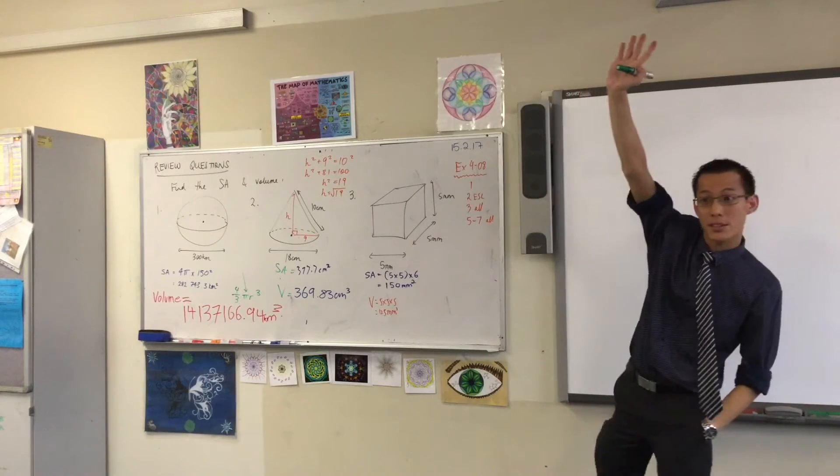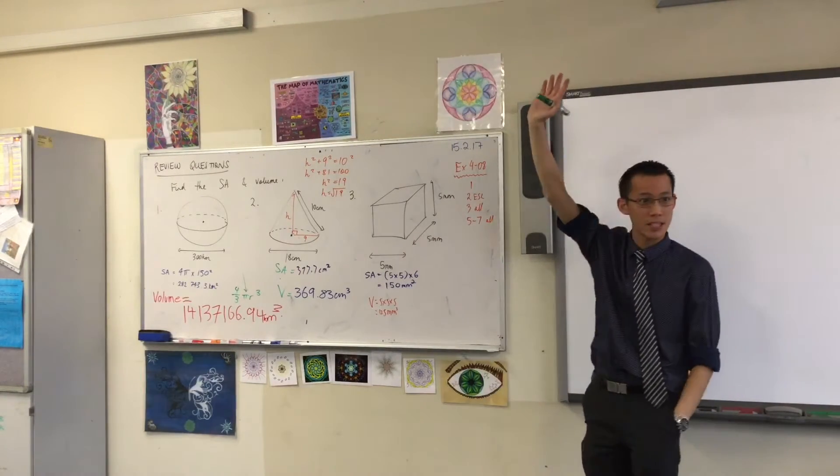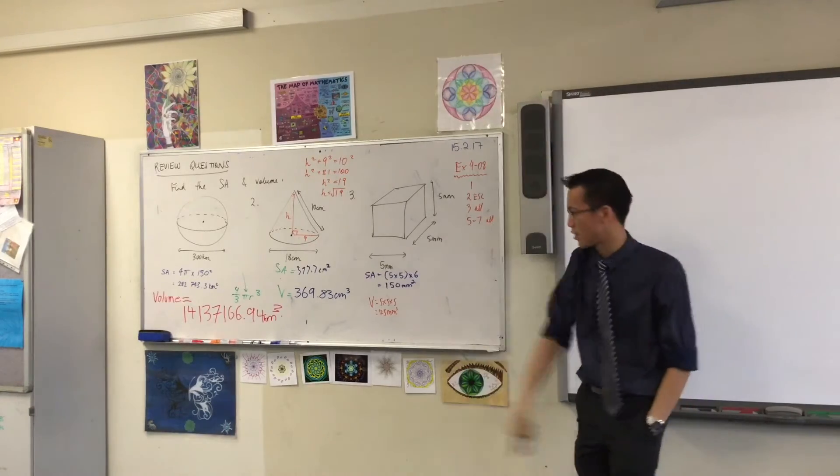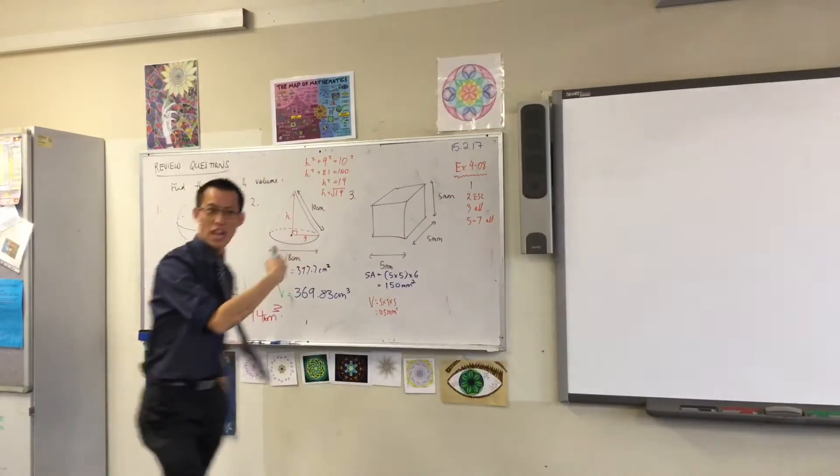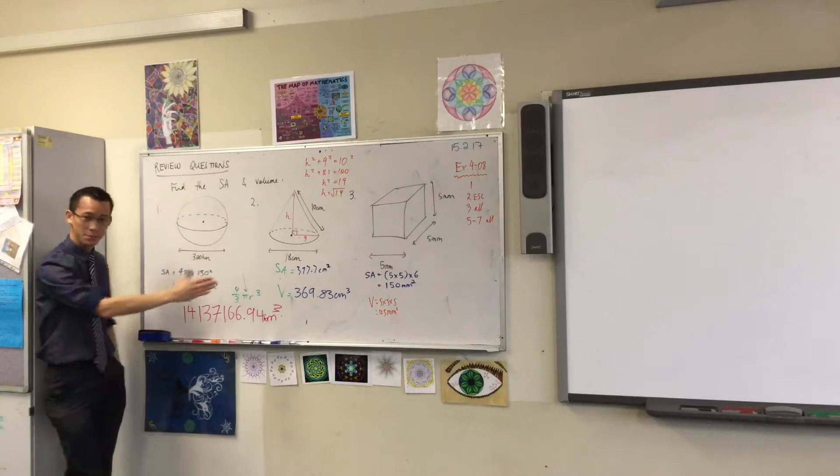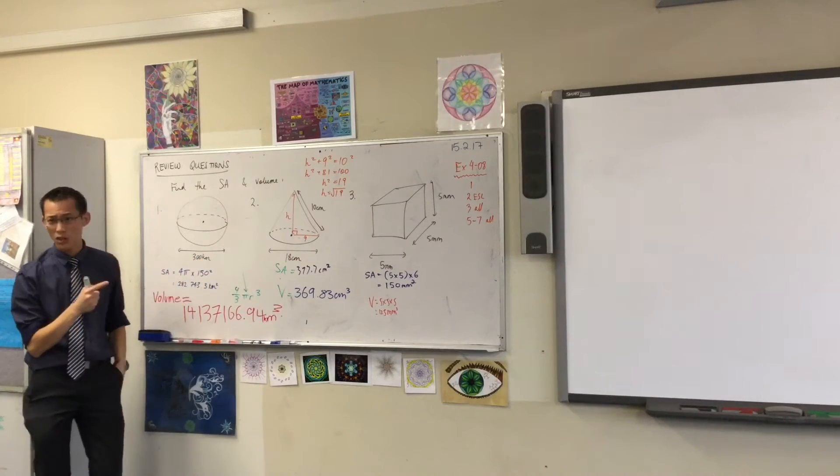So, can I see a show of hands? Who agrees? 1-4-1-3-7. Yep, we've got a few. Yep, excellent. Thank you. Let's have a look at this cone here. So, this one was also one of the tricky ones.